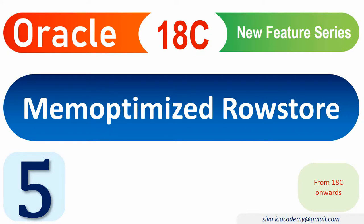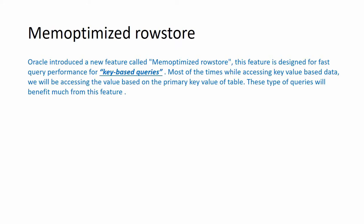Welcome to my YouTube channel. In this video we will see about a new feature called mem-optimized row store. This feature is introduced from Oracle 18c and is mainly from a performance aspect of a query. When a query is accessed based on a key value — for example a primary key or an indexed value — these kinds of queries will benefit much from this feature.